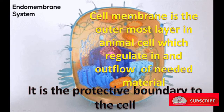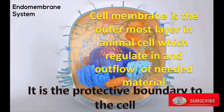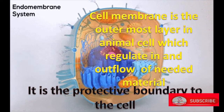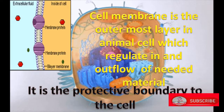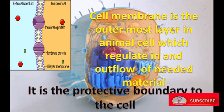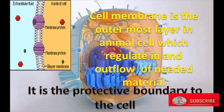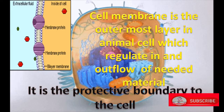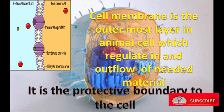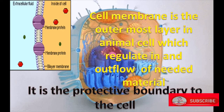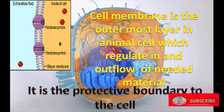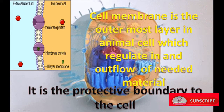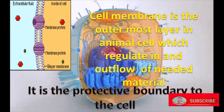Cell membrane is the outermost layer in animal cells which regulates the inflow and outflow of needed material. It is the protective boundary to the cell, exchanging necessary materials and waste from the cell to the external environment.